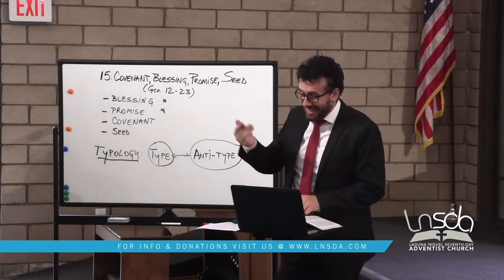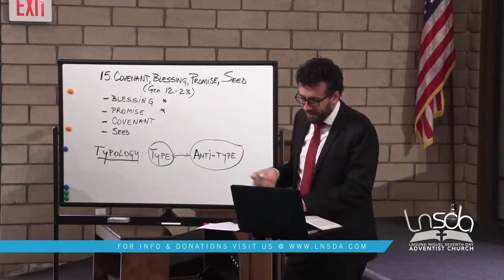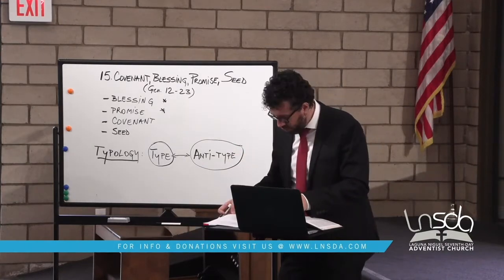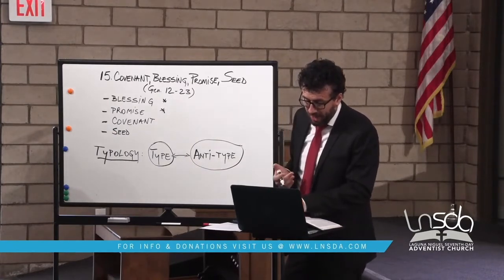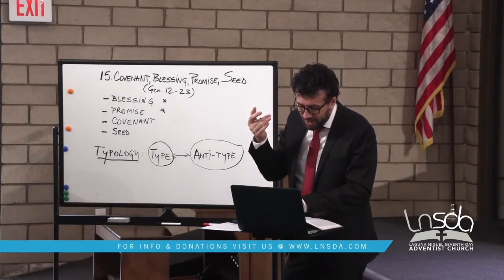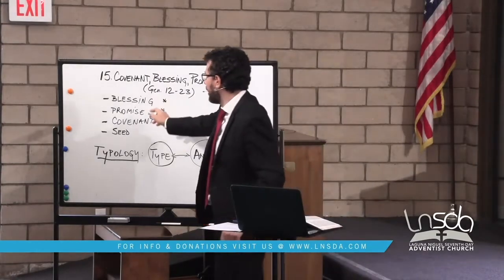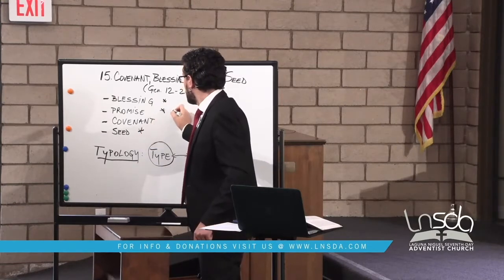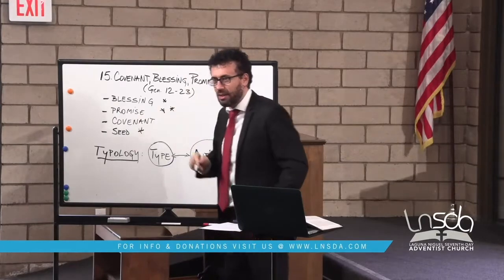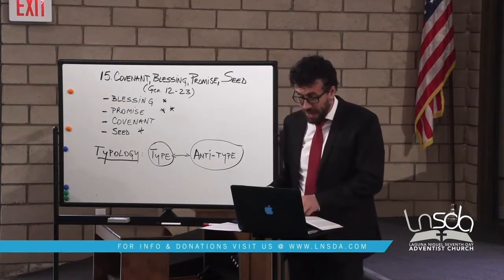Then Abraham arrives at Canaan, chapter 12 verse 7 — the same verse repeated in chapter 24. 'Then the Lord appeared to Abraham and said, To your descendants I will give this land.' What you find here is the seed and the promise — a promise regarding the seed. Next step, Lot separates from Abraham in chapter 13.